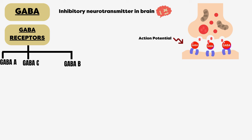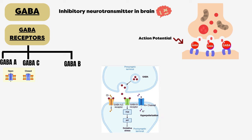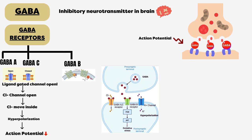GABA A and C are ligand-gated GABA receptors. After binding of transmitter, chloride channels open, chloride moves inside the cell, hyperpolarization occurs, and the action potential decreases. GABA B acts through G protein coupling mechanism resulting in the opening of potassium channels. Potassium ions move out and again hyperpolarization occurs.